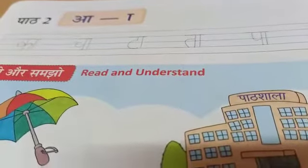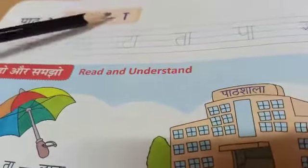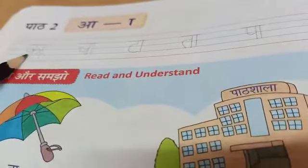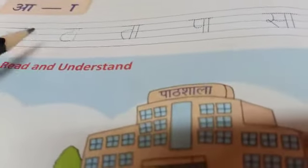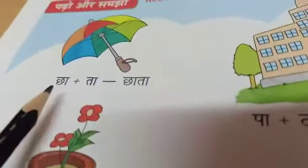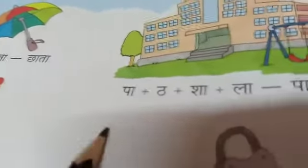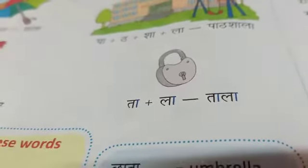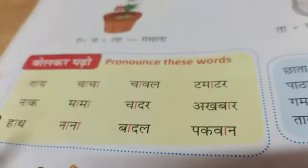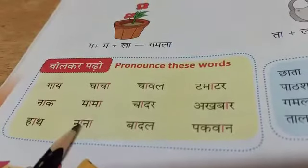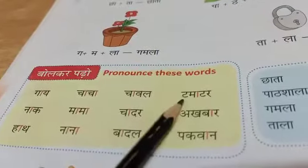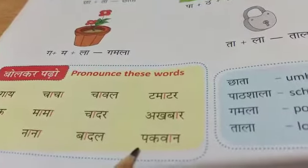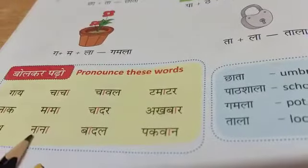Open your textbook to page number 14. Aa-ki maatra is a standing line with shiru rekha - the shape of T. You have to trace: Ka-chata, Chha plus ta - Chhata, Pa plus tha, Shha plus la - Paat Shala meaning school, G plus ma plus la - Gamla, Ta plus la - Tala meaning lock. Then read: Gain, Naak, Haar, Chacha, Mama, Nana, Chowal, Chater, Badal, Tomato, Akhbar, Pakhwar. See here they have highlighted the maatra - Aa-ki maatra.